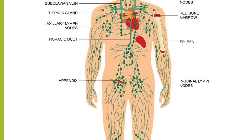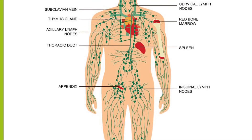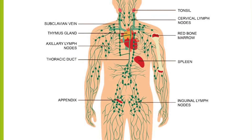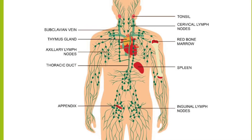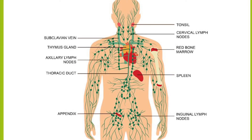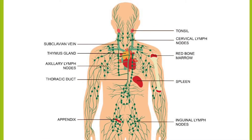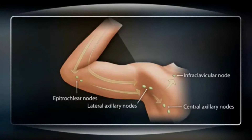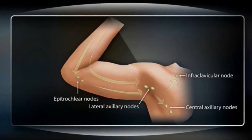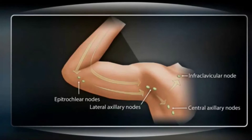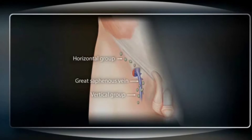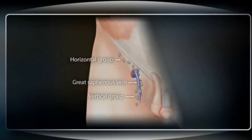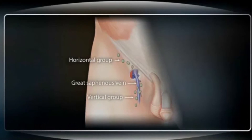The lymphatic system is a vascular network that drains lymph fluid from tissues and returns it to the venous circulation. Lymph nodes are round, oval, or bean-shaped and vary in size according to location. Only superficial lymph nodes are accessible for physical examination. In the arms, we can find epitrochlear, lateral axillary, and central axillary nodes, and infraclavicular nodes. In the legs, superficial lymph nodes include the horizontal group, which lies in the thigh below the inguinal ligament, and the vertical group, which lies at the upper part of the great saphenous vein.